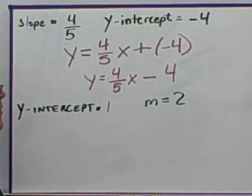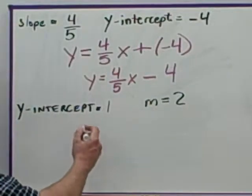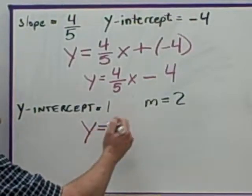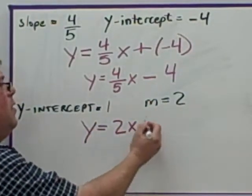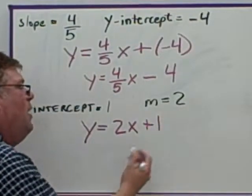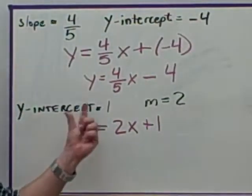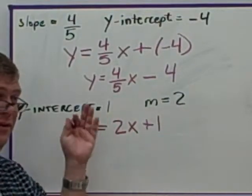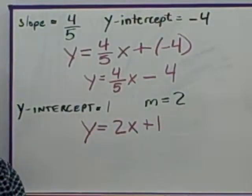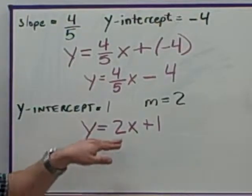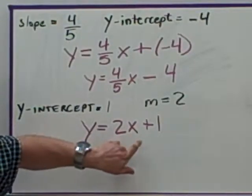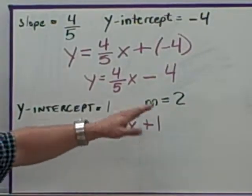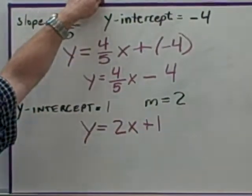Here we have the y-intercept and the slope given to us, but they are given in reverse order. That doesn't change anything — you still have y equals m of 2 times x plus a y-intercept of 1. Don't get confused thinking the first number is always the slope. Remember: the slope is what multiplies your x, and the intercept is what gets added or subtracted at the end.